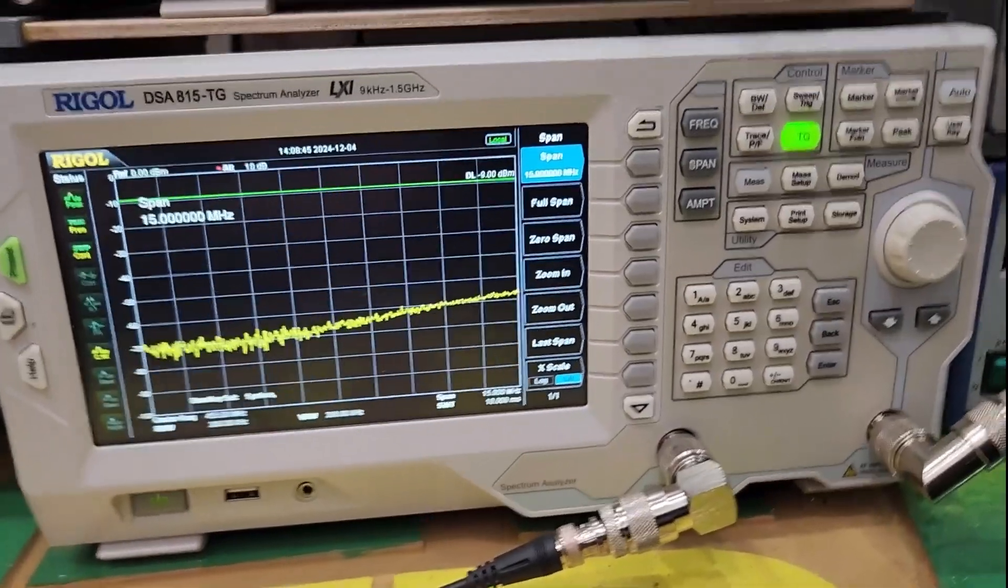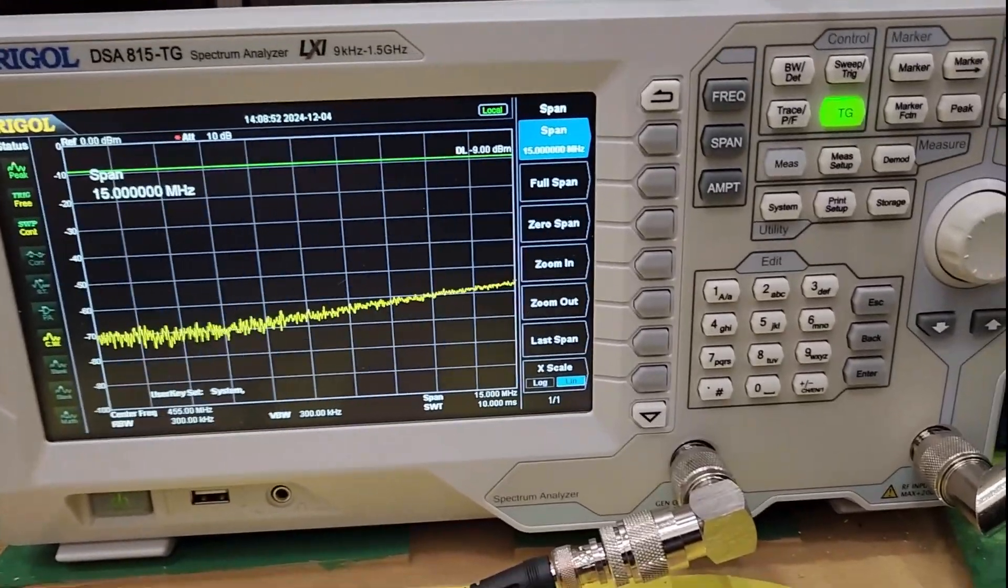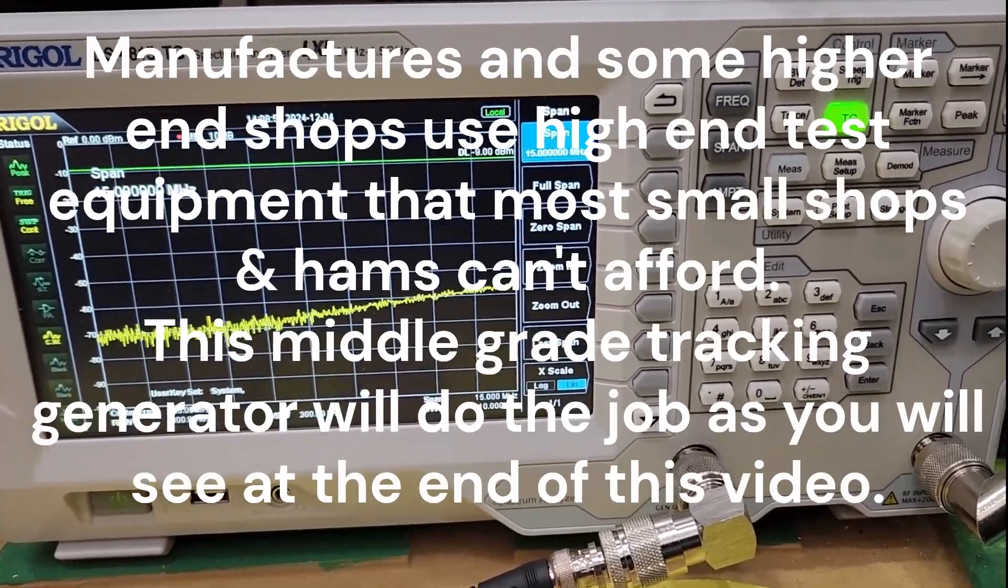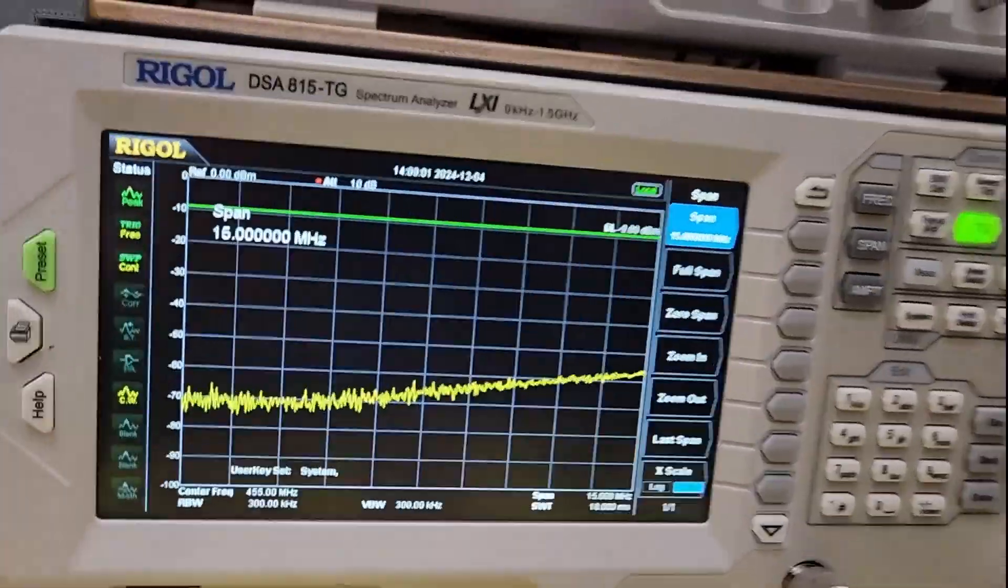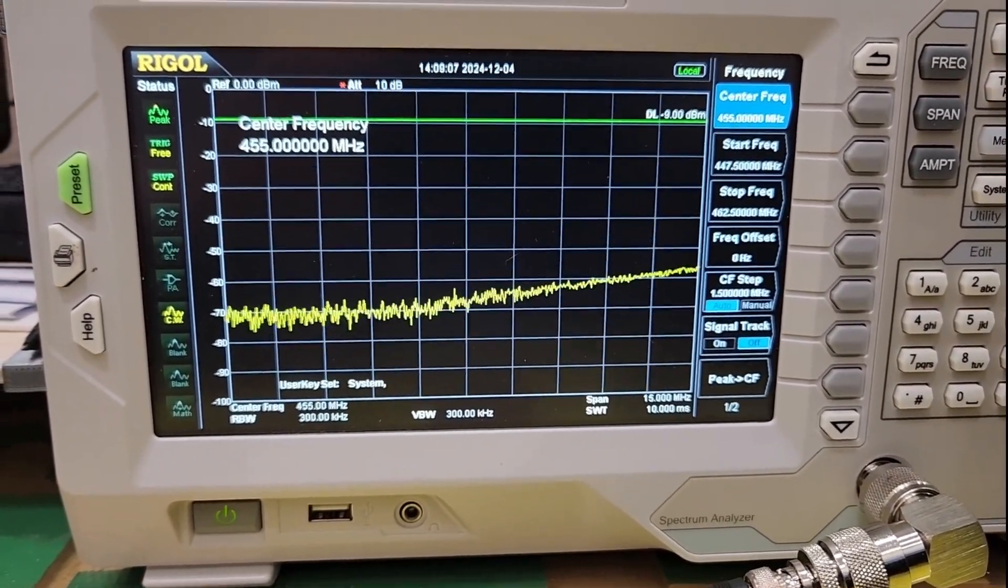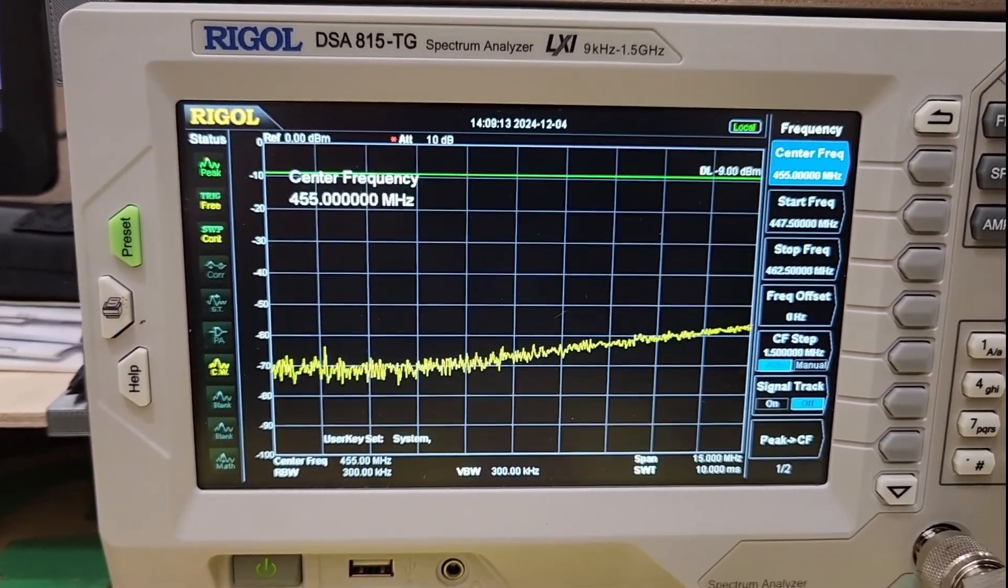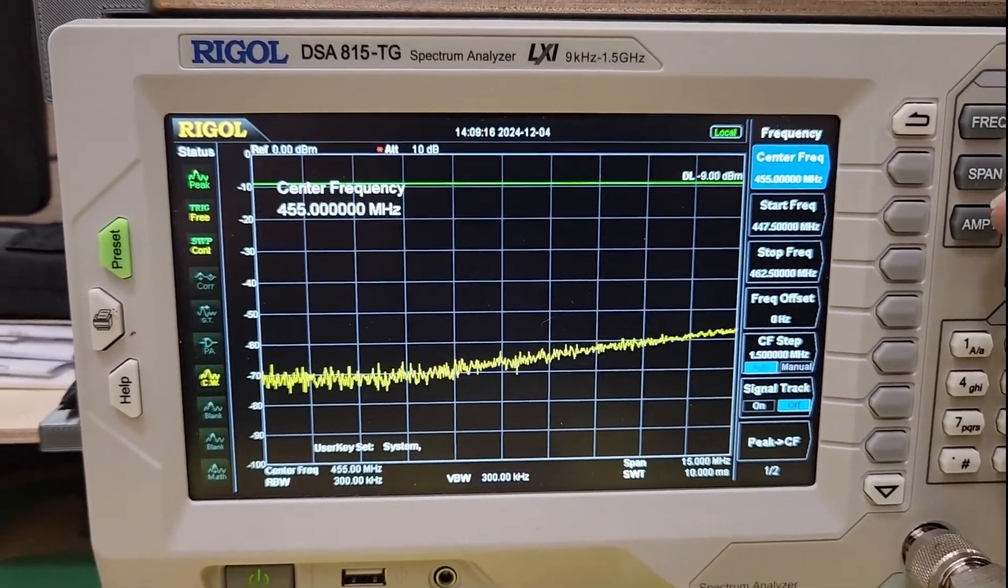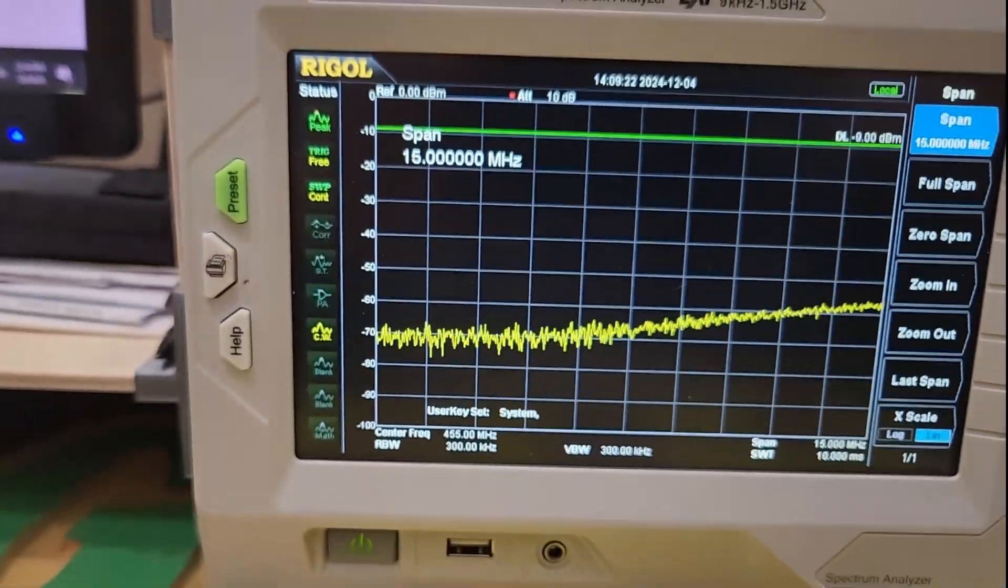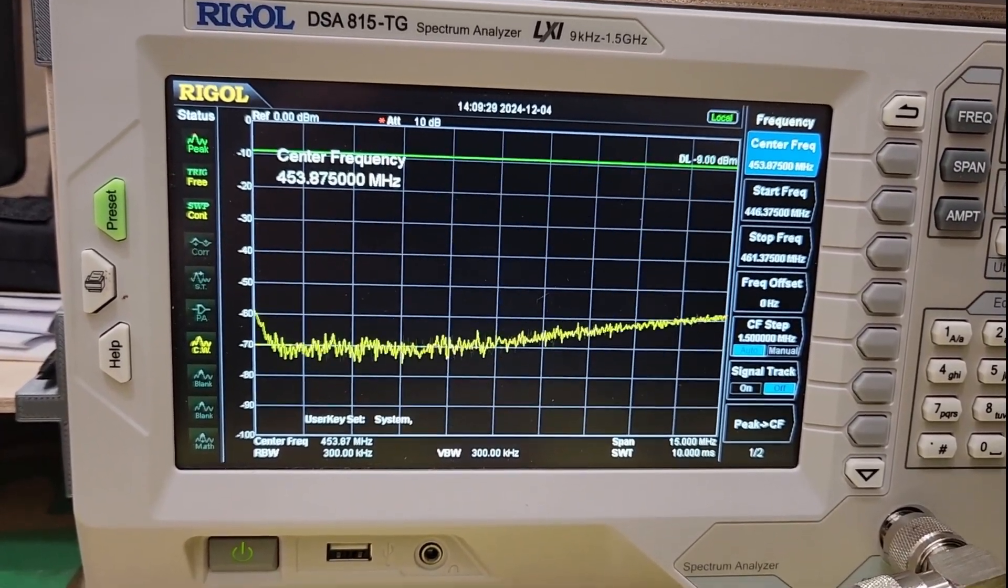To tune a duplexer, the best piece of test equipment is the tracking generator. This is a spectrum analyzer slash tracking generator. We use the tracking generator portion of it. I've punched in 455 megahertz since it's UHF. I know it's going to be somewhere between 440 and 470, so I put in a span of 15 megahertz.